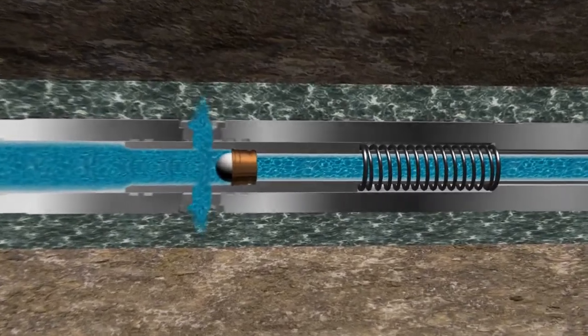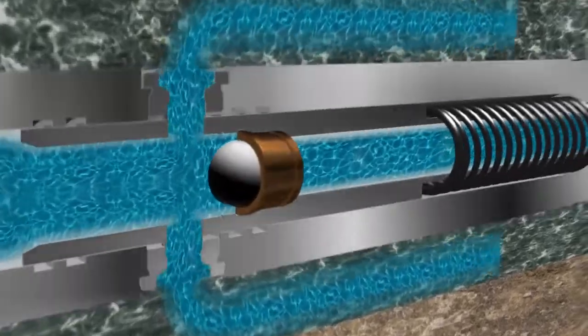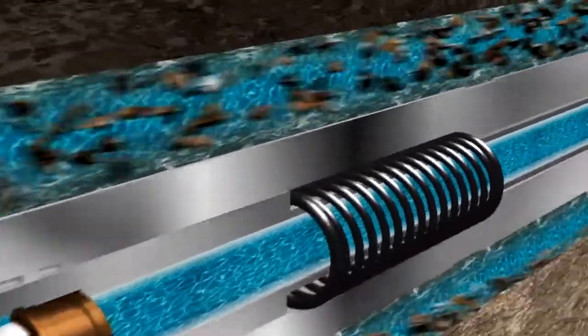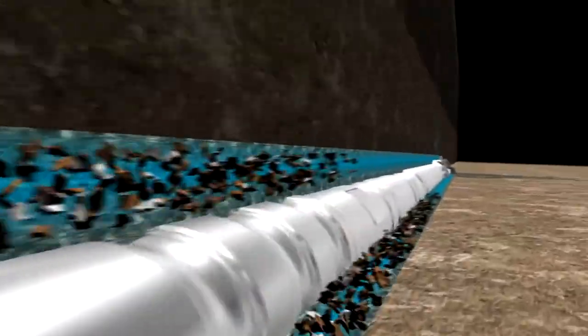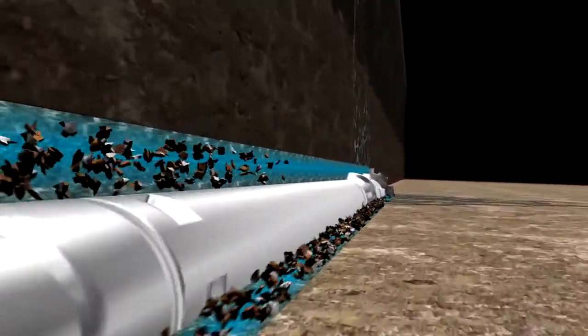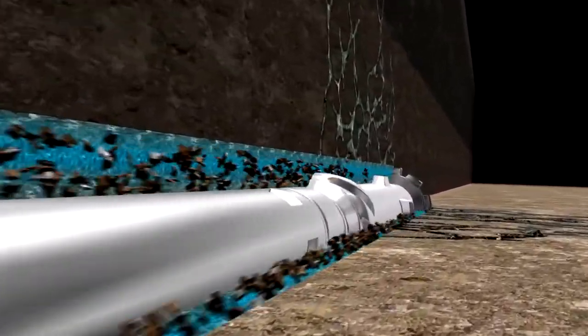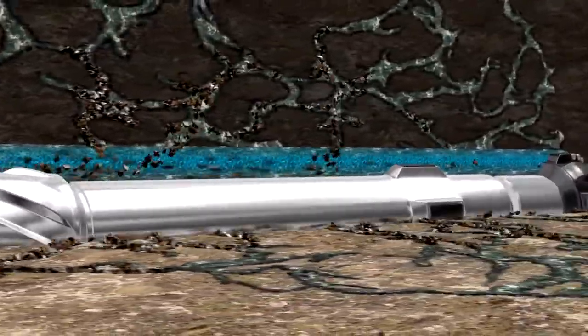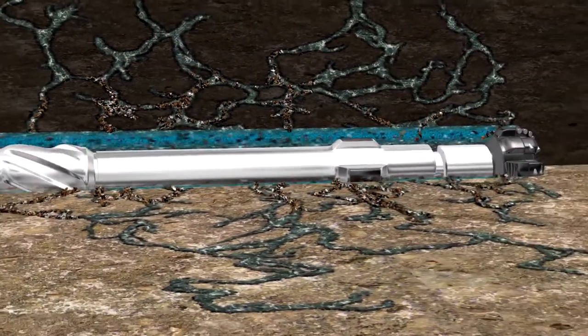The ball triggers a mechanism to circulate LCM material through two side ports into the annulus and 100% of the flow is bypassing. Rock fractures are sealed off, avoiding plugging the BHA or a time consuming and costly round trip.